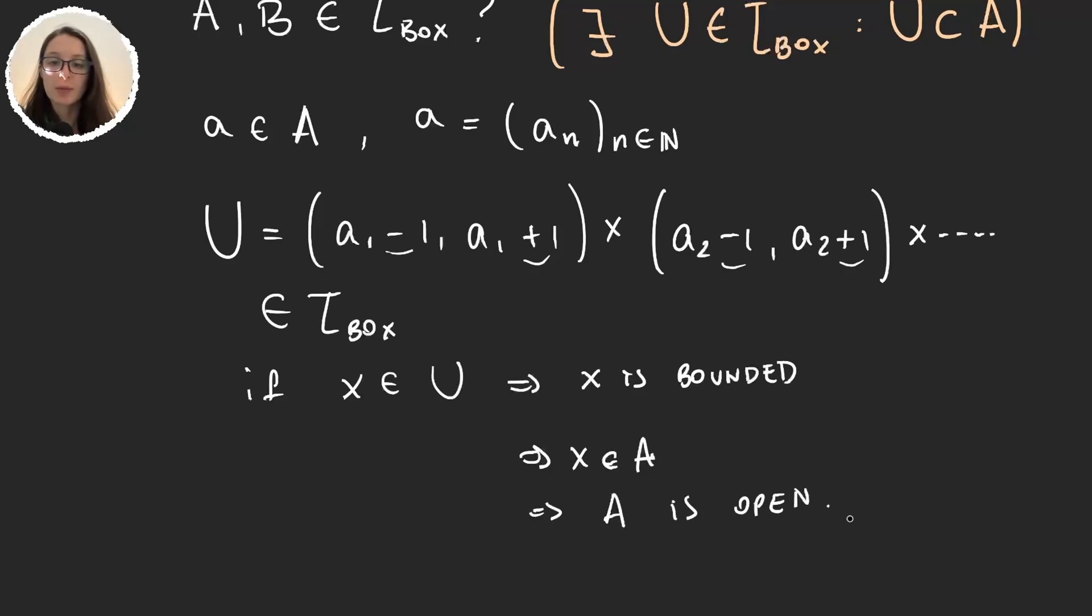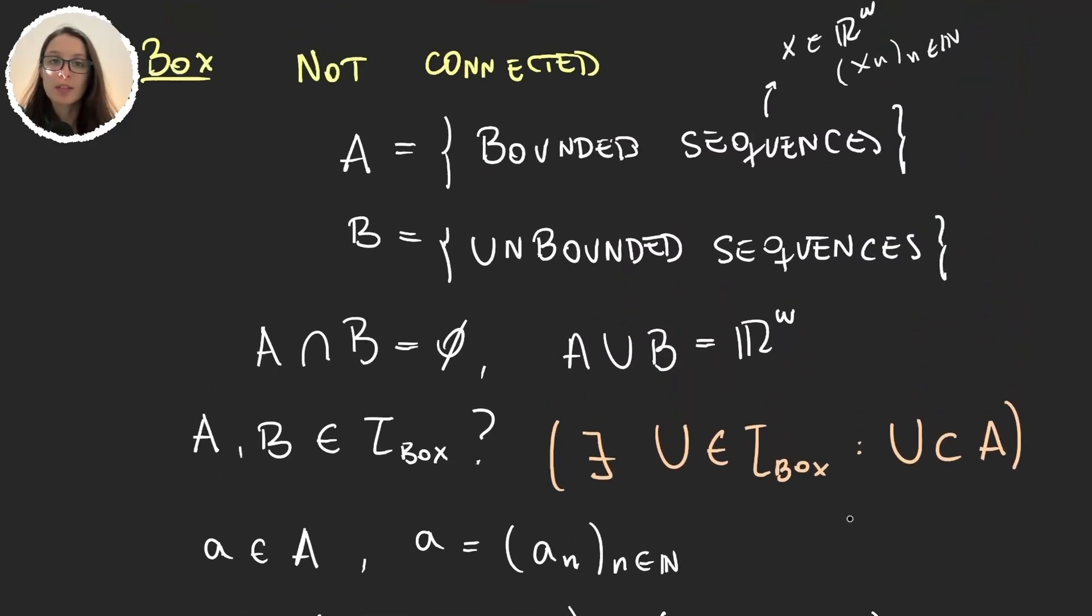So given that we were able to prove that it is open, then R omega with the box topology is not connected.